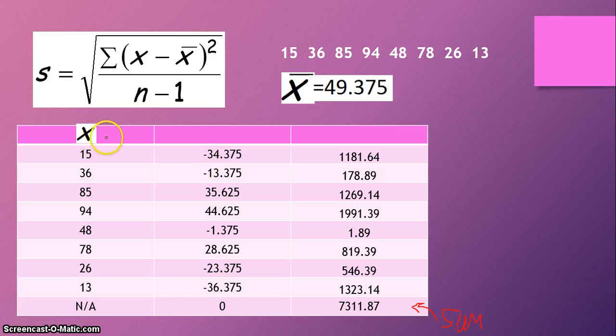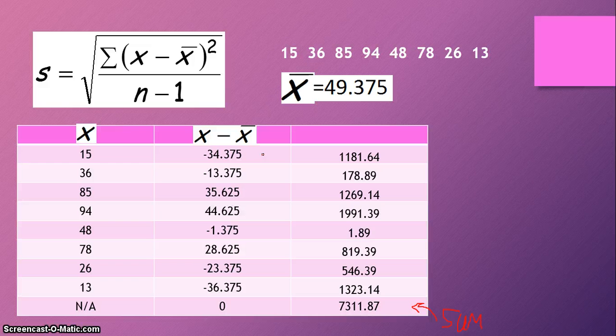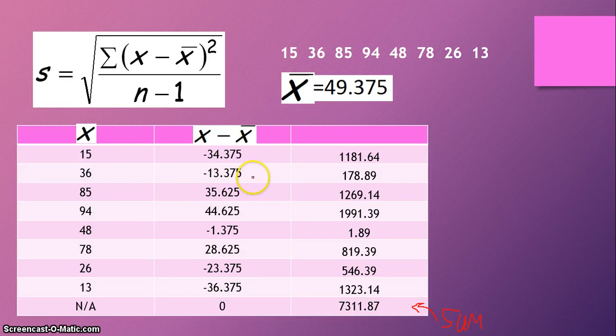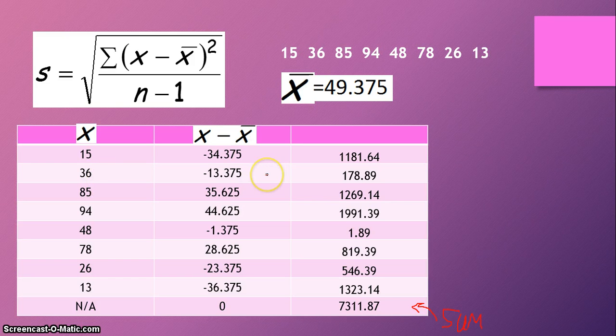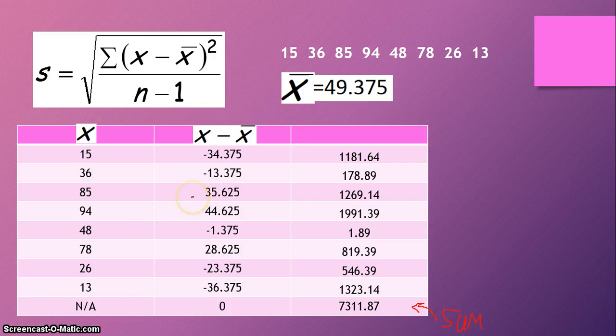And so we've covered the left column, it's just our data points, and then the middle column is our deviations. We're simply subtracting a data point from the mean. So for this first negative 34.375, I simply subtracted 15 from, or I simply subtracted 49.375 from 15. This negative 13.375, 36 minus 49.375. This next, this 35.625, 85 minus 49.375, and so on and so on and so on.